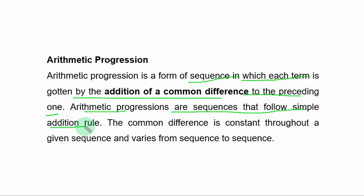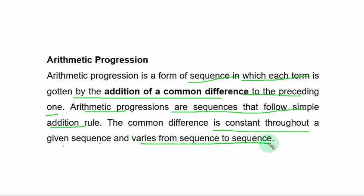For example, if the first term of the sequence is 2 and the common difference is 5, then the second term will be 2 plus 5, that is 7. The third term is 7 plus 5, that is 12, and so on. The common difference is constant throughout a given sequence and varies from sequence to sequence.